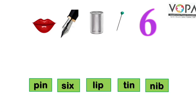Piyare bacchon, upar jo tasveer di gayi hai, unhi tasveeron ke naam yahan neeche hare rang ke box mein diye gaye hain. Toh aapko unhi tasveer ko uske naam ke saath jodna hai. Jaise pehli tasveer hai Lip ki — toh in hare box mein Lip kahan hai, dekho yeh teesre number par Lip hai. Is tarah Lip ki tasveer ko hum log Lip is word se jodenge.